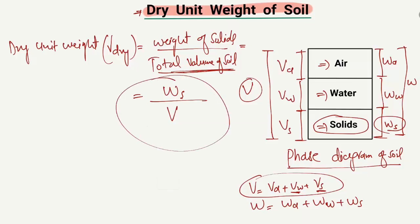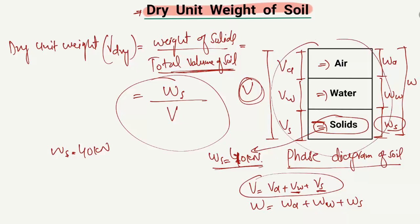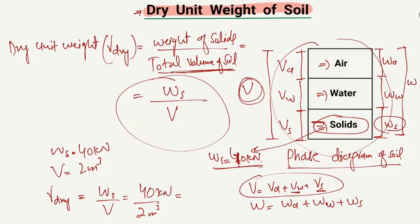Now let's take an example. For example, the weight of the solids WS is equal to 40 kilonewtons, and the total volume of the soil sample V is equal to 2 cubic meters. So the dry unit weight, gamma dry, will be equal to WS divided by V — that is 40 kilonewtons divided by 2 cubic meters — which gives 20 kilonewtons per cubic meter. So 20 kN/m³ is the dry unit weight of this soil sample.